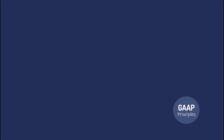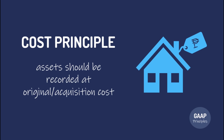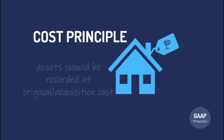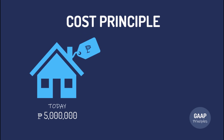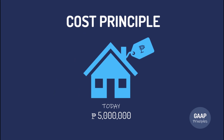First, the Cost Principle. This requires that assets should be recorded at original or acquisition cost. So if a company purchased a property for $5 million today, and three years after the cost of the property is already at $10 million, it will still be recorded at a cost of $5 million.